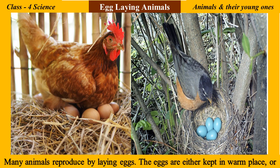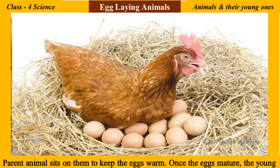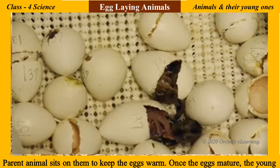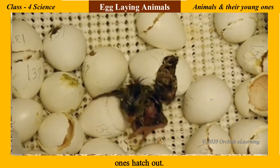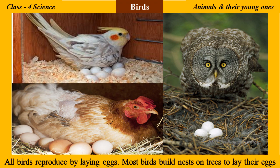The eggs are either kept in a warm place or the parent animal sits on them to keep the eggs warm. Once the eggs mature, the young ones hatch out. Birds — all birds reproduce by laying eggs.